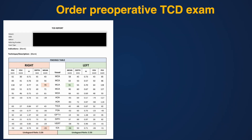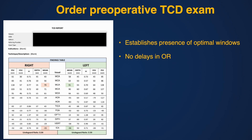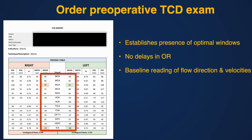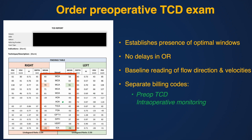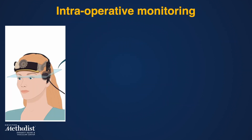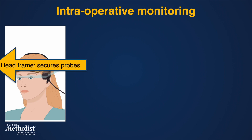Ordering a preoperative TCD exam for patients is a must. This step helps establish the presence of optimal transtemporal bone windows, so we avoid delays in the OR because we already know if the patient is not suitable for TCD monitoring. We also establish baseline measurements of flow velocities and directions in the various vessel segments. There are separate billing codes for a pre-op exam and for monitoring during surgery. To start monitoring in the operating room, the ultrasound technologist first places the TCD head frame around the patient's head.